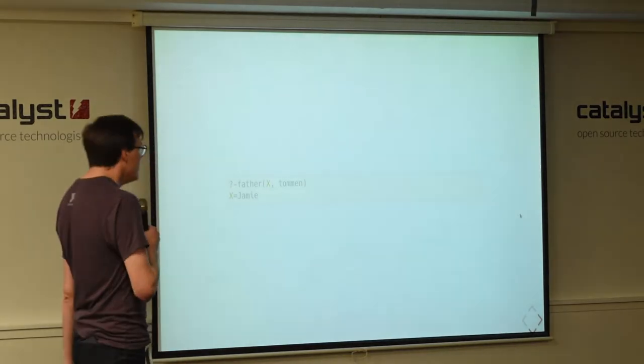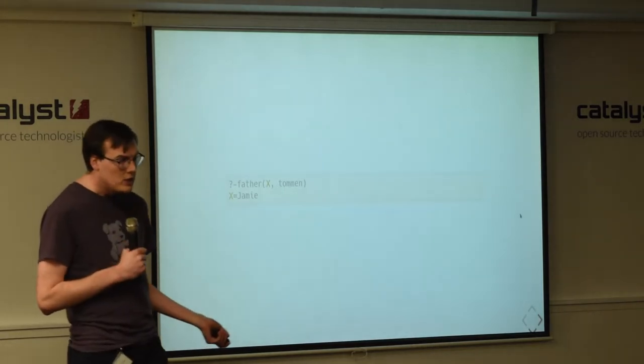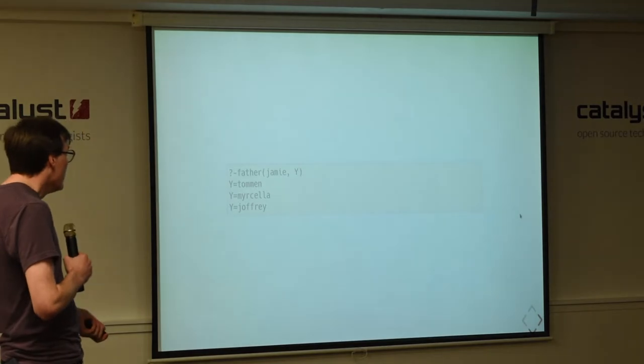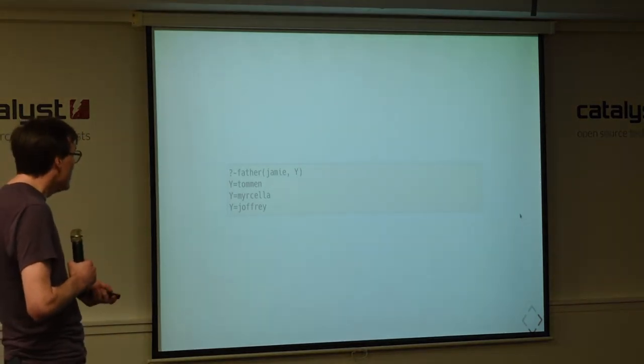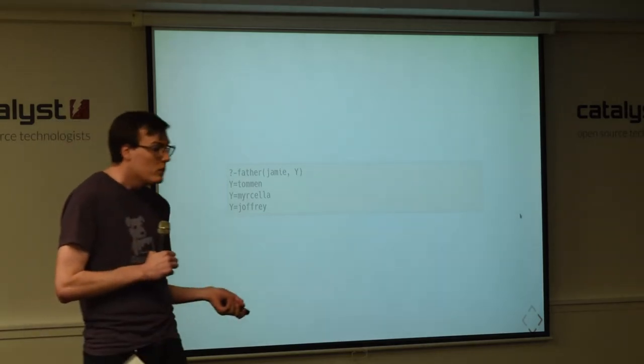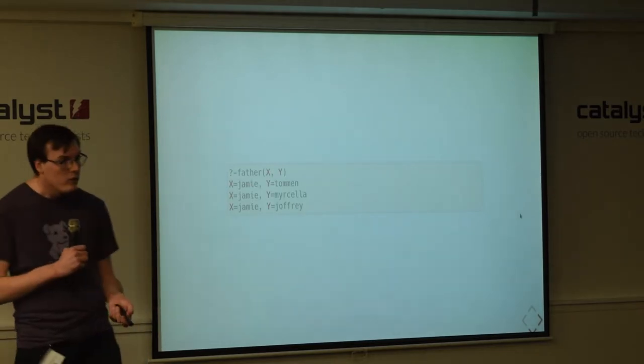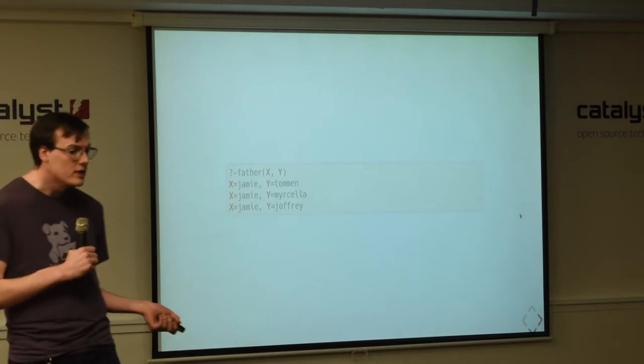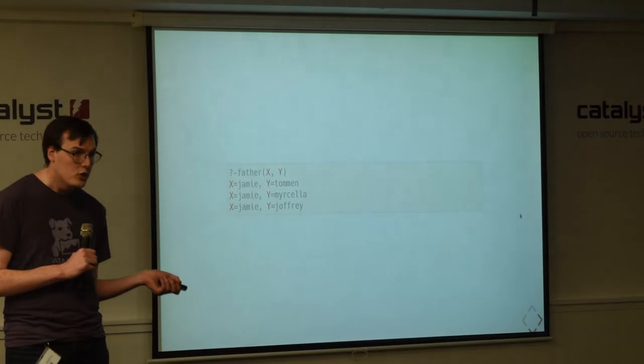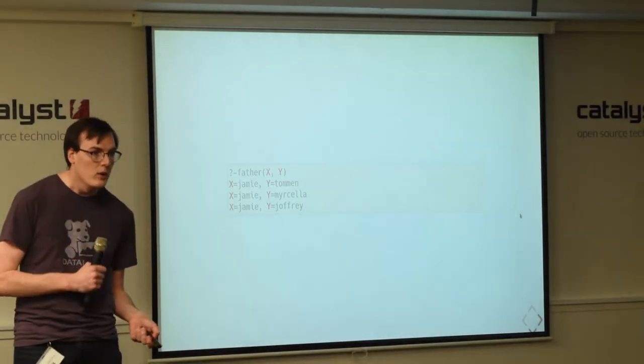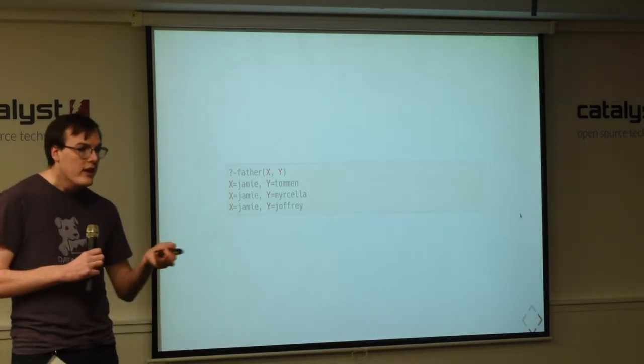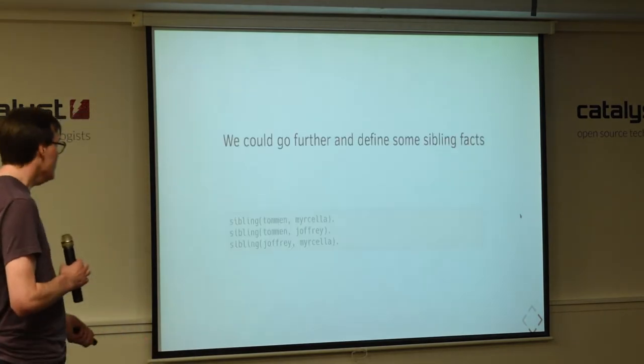If we reverse the query and ask prologue, for Jamie, what values of y satisfy this query? Prologue can come back and tell us any value of y which makes that statement true. And if we replace both constants with variables, then prologue will actually spit out every combination of x and y that makes the father fact true. So, that's the key concept with prologue. It really only deals with true or false. And when we're placing these variables in here, what we're asking prologue to do is find values for x and y that make this true.